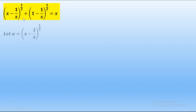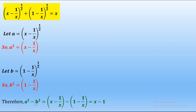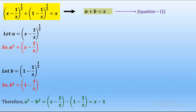This is the expression given. First we will consider the part (x minus 1/x)^(1/2) and set it equal to a. Squaring both sides we obtain a² = x minus 1/x. Similarly, the term (1 minus 1/x)^(1/2) is assumed to be b. Squaring it we obtain b² = 1 minus 1/x. Therefore the difference of the two squares, a² minus b², equals x minus 1. Now substituting into the given expression, it can be written as a plus b equals x. This is equation 1 for future reference.